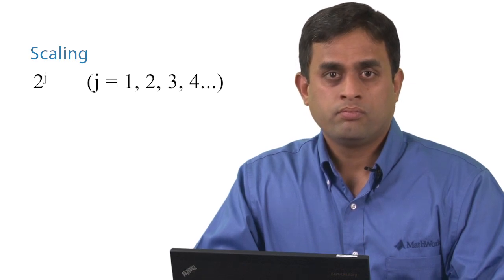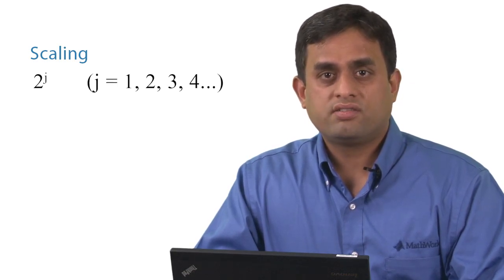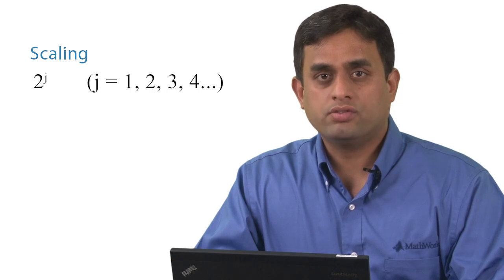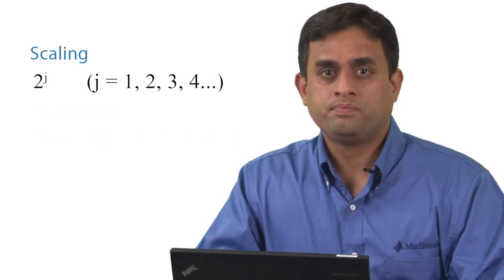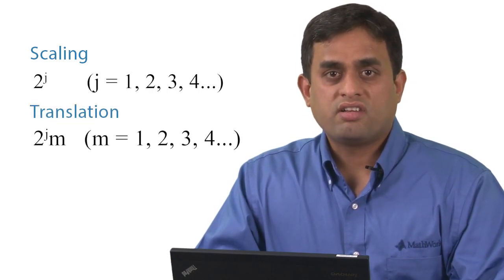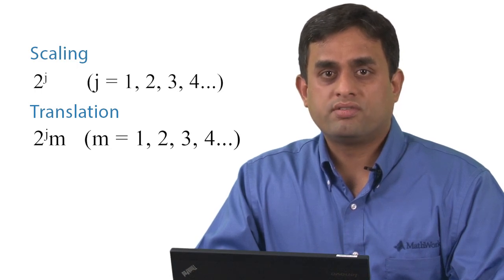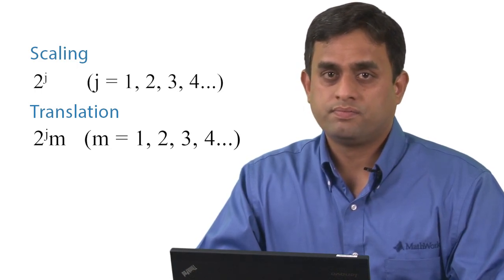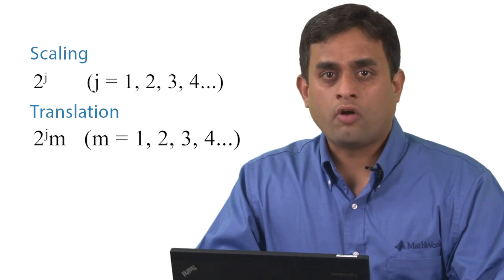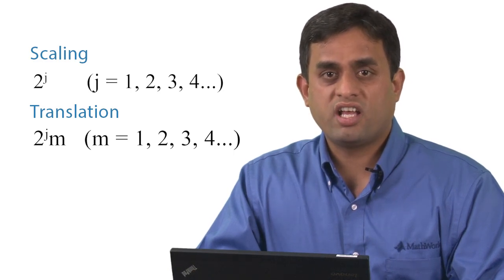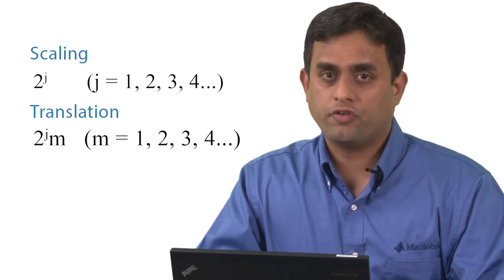The base scale in DWT is set to 2. You can obtain different scales by raising this base scale to integer values represented in this way. The translation occurs at integer multiples represented in this equation. This process is often referred to as dyadic scaling and shifting.